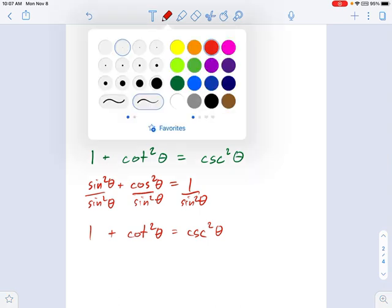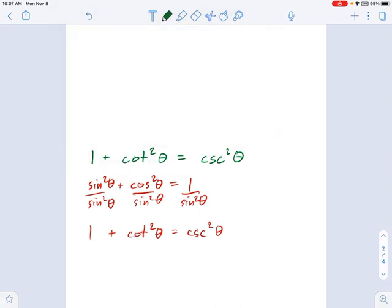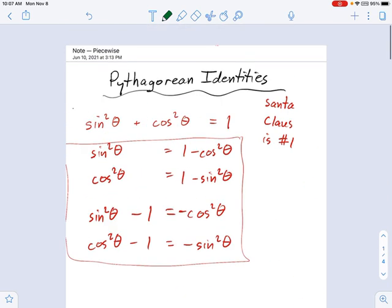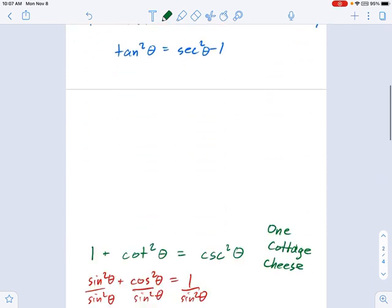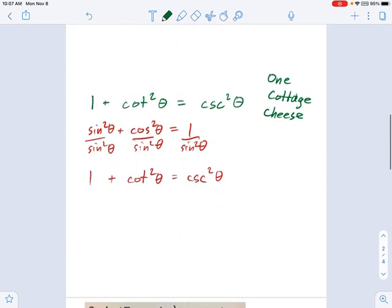So the phrase for this one, if you want to remember all three of them, this is 1 cottage cheese. If you come up with a better one, I am all ears. But for now, what we've got is Santa Claus is number 1, 1 tan secretary, and 1 cottage cheese. These will come in handy many, many times. They're very important.